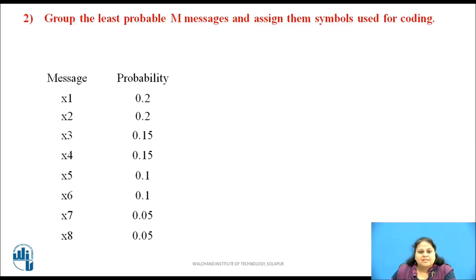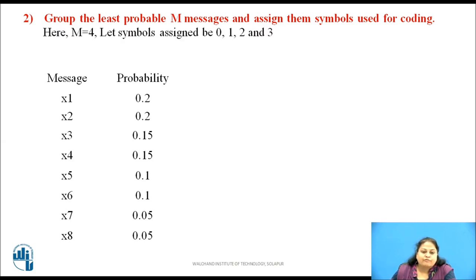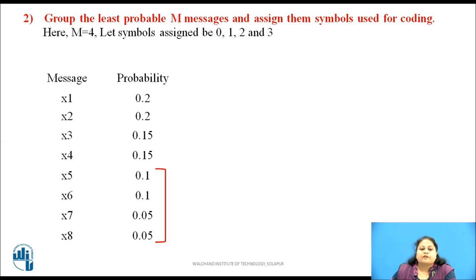The second step is to group the m messages with the lowest probabilities and assign them the symbols used for coding. In this case m is equal to 4, so we use the symbols 0, 1, 2, and 3. The least four terms with lower probabilities are grouped and the symbols are assigned as shown.